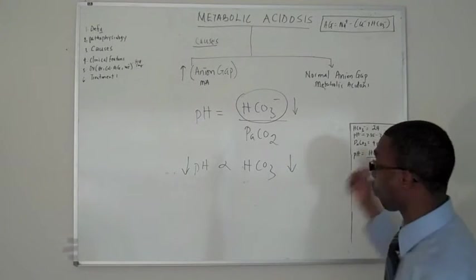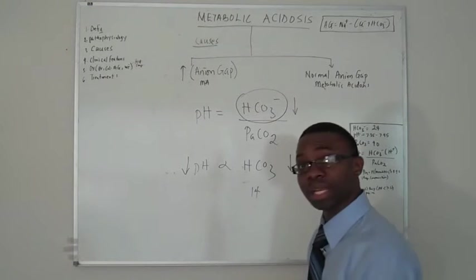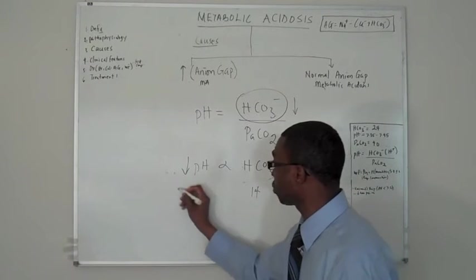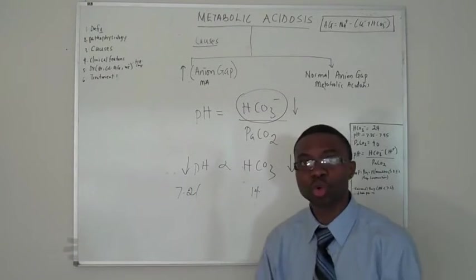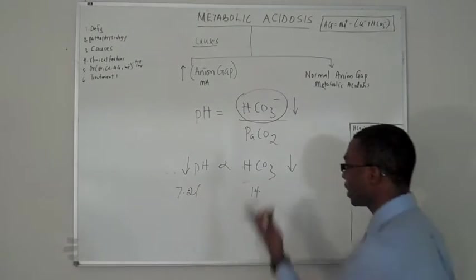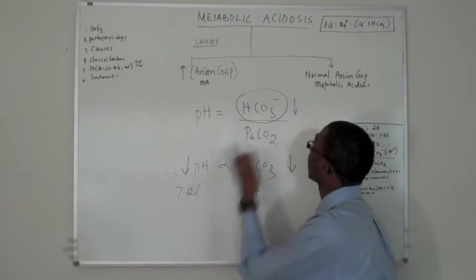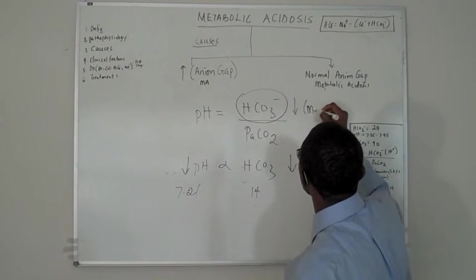If bicarb is low, automatically my pH will be low. If bicarb, which is normally 24, becomes 14, what do we expect my pH to be? I'm just making this number up. That's 7.21. Basically the point is, if this goes down, this goes down. That is where your problem is.